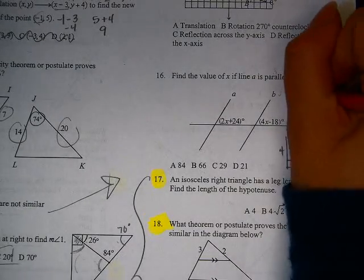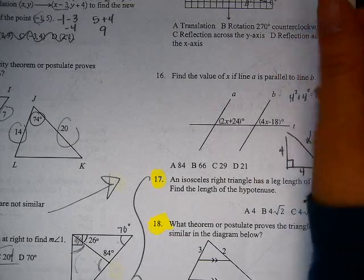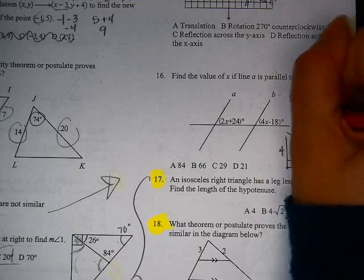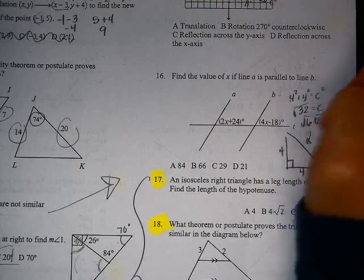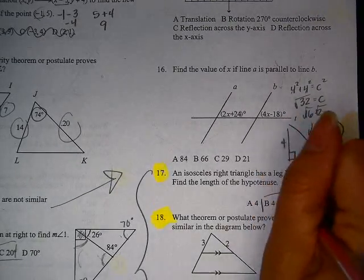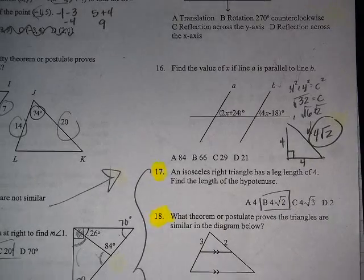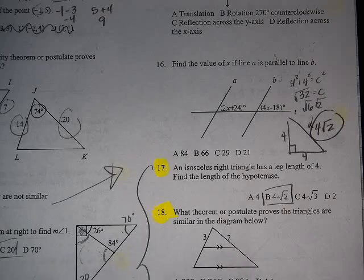So 4 squared plus 4 squared is equal to c squared. That is 16 plus 16 is 32. And when I square root that, I get 16 times 2. And that is 4 root 2. And that, my dear friends, is a special right triangle that we are going to learn about in the next chapter. So a little bit of a spoiler alert.